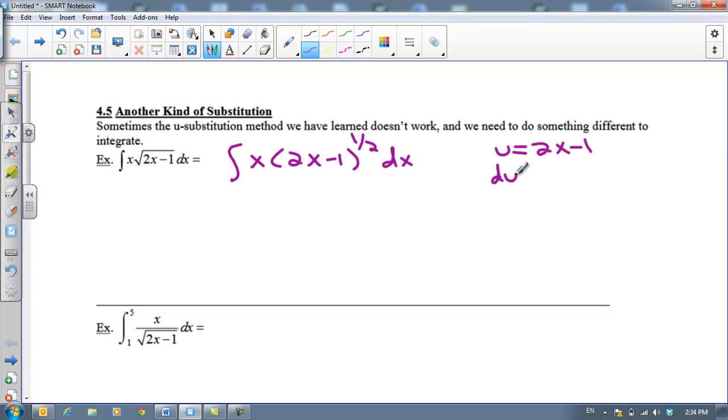Okay so you probably would select u to be 2x minus 1. And then our next step is how are du and dx related. So du/dx is 2. And so you can see how this is different. I have an x here. This is almost like too much in the derivative and I don't know how to substitute for this x. The dx is fine but what about this extra x? You might think you could take it out in front but you cannot do that. You can only do that with constants.